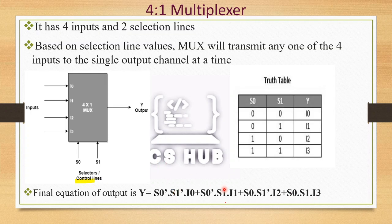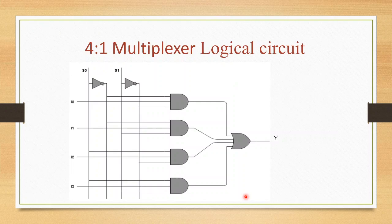For the multiplexer logic circuit, we implement the four AND terms using gates. We complement S0 and S1 to get S0' and S1', then AND the appropriate combinations with each data input I0 through I3 to get the four product terms, and OR them together to get the final output Y. The general structure is: 2-raised-to-N inputs, N selection lines, and 1 output line.